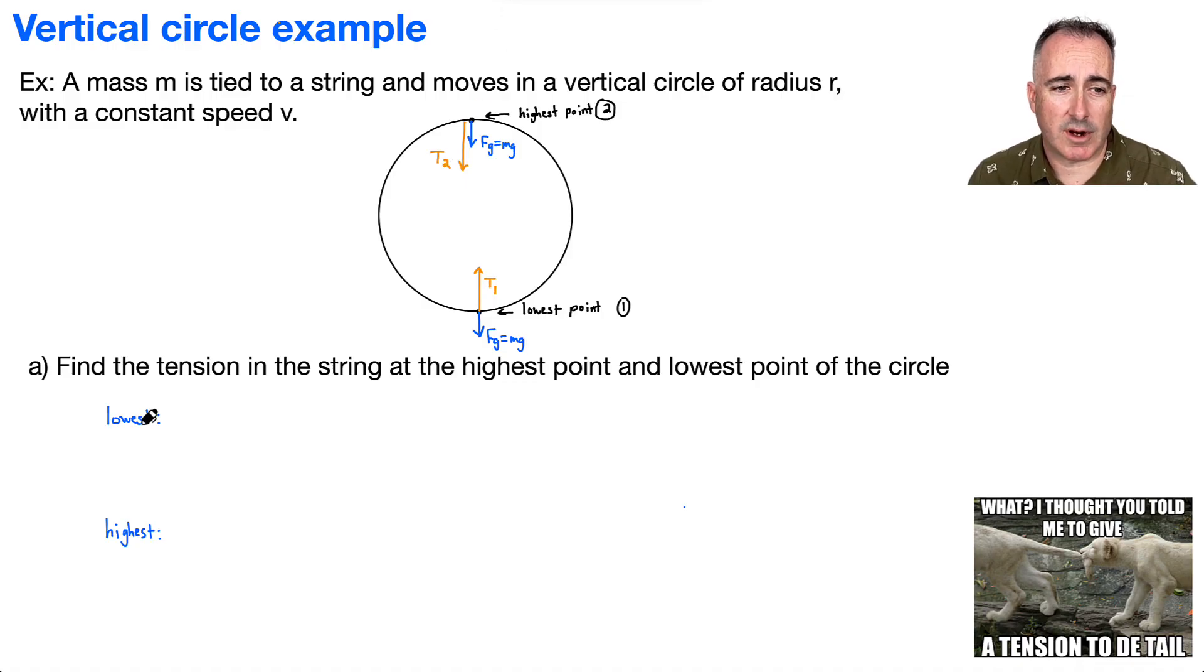And so then, in order to find out what is the tension at the lowest point, let's just think about this. Let's use Newton's second law. So that says that f net, that's the net force, is going to be equal to tension 1 minus mg. So I can say T1 minus mg. But remember, if we've got this f net, what is this net force?